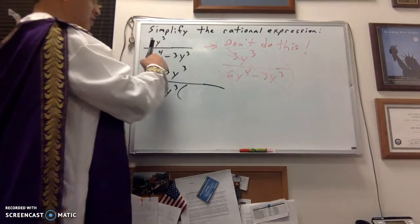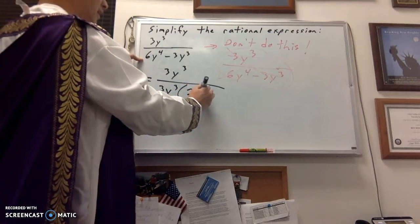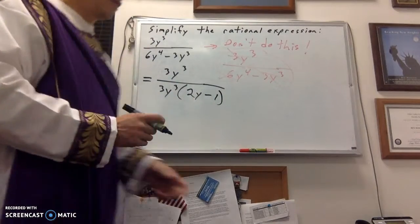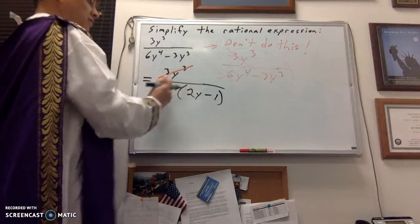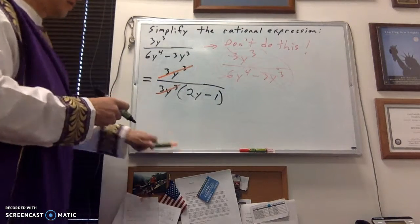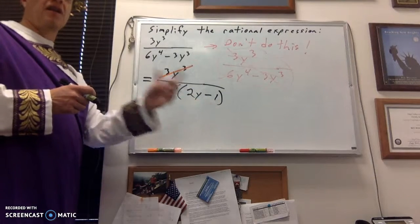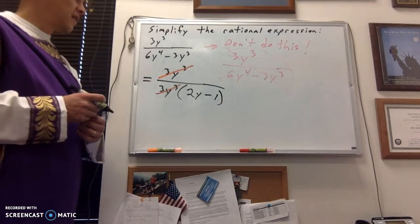You factor that out of the 6y to the 4th, that gives you a 2y, and then here a minus 1, right? Now, we can divide out factors. Just notice this 3y cubed, it's now getting multiplied to the entire denominator. That's what's making this so that you can, alright?